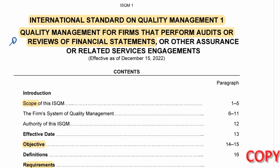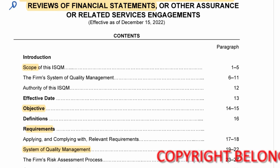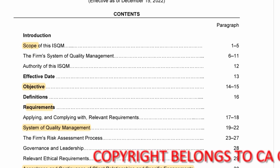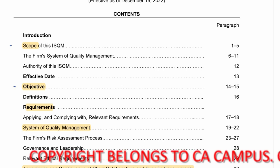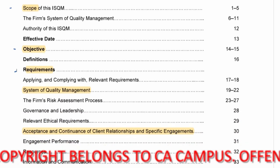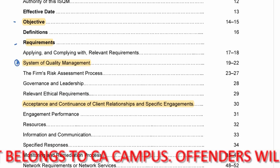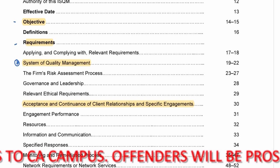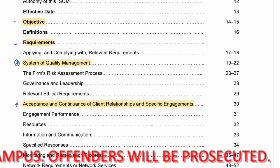ISQM1 covers quality management for firms that perform audits or reviews of financial statements or other assurance or related service engagements — essentially any engagement a firm will accept. I've highlighted the scope, the objective, and the requirements, specifically two requirements: the system of quality management, which explains all of the components that the firm is required to have quality management on.